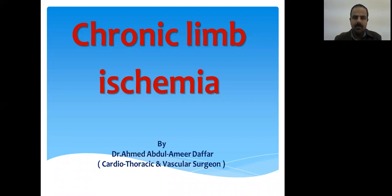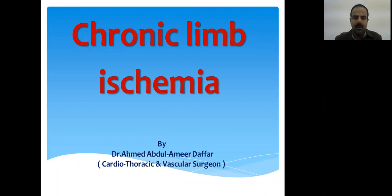Today we will talk about chronic limb ischemia. If you remember, we talked about acute limb ischemia in the previous lecture. Today we are about to talk about chronic limb ischemia, which means al-qusur al-sharyani al-muzmin (chronic arterial insufficiency).